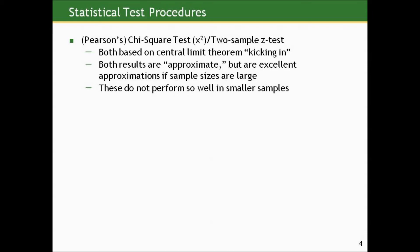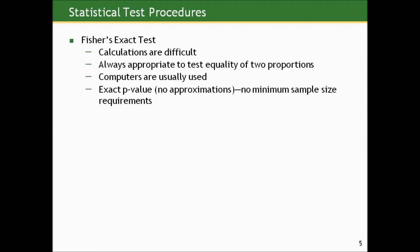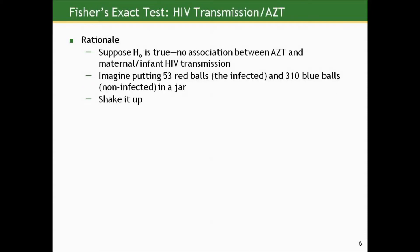Now shake that jar up as much as you can. What we're going to do is shake it, shake it, shake it, and then we're going to close our eyes and pick out 180 balls. And that will represent our AZT group, as there were 180 children born to mothers taking AZT. What we're calculating with Fisher's exact test is, if we had taken that jar, shaken it up, and then randomly taken 180 balls out of it, we calculate the probability of getting 13 or fewer red balls among the 180. That represents our one-sided p-value for Fisher's exact test. The two-sided p-value is just about, but not quite exactly, twice the one-sided p-value. And it accounts for getting a really large number of red balls in the AZT group that would be less likely than 13 as well.